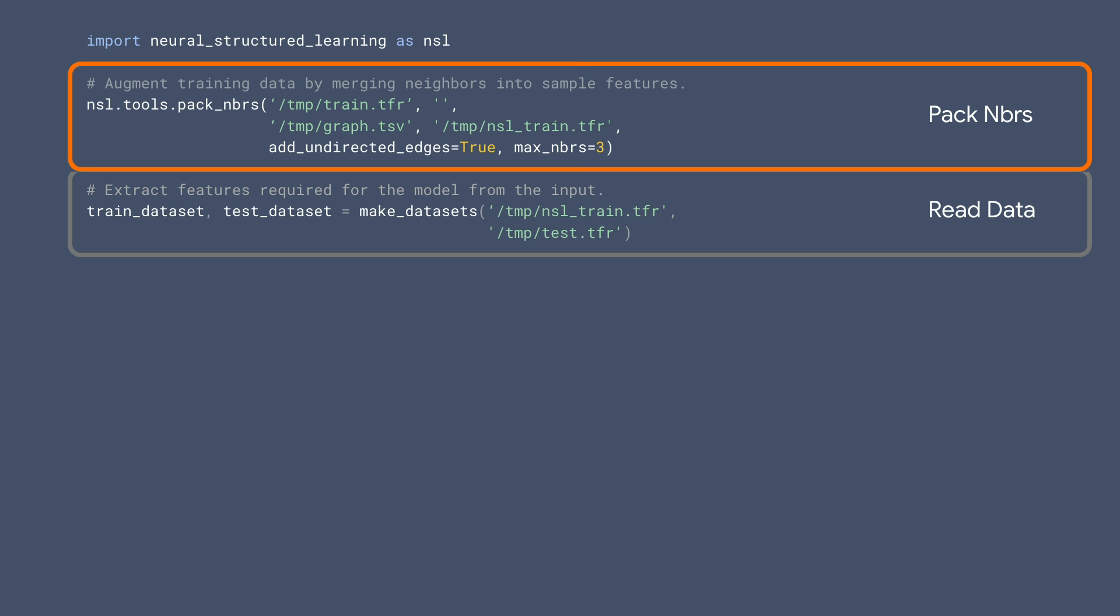Since we're dealing with natural graphs here, we expect a graph to already exist in the input. The first step is to augment the training data to include graph neighbors. This involves combining the input citation graph and the features of the documents to produce an augmented training data set. The Pack Neighbors API in Neural Structured Learning handles this. Notice that it allows you to specify the number of neighbors used for augmentation. In this example, we use up to three neighbors.